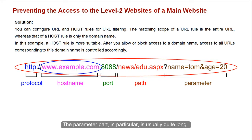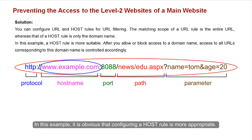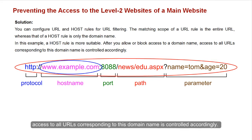The parameter part, in particular, is usually quite long. In this example, it is obvious that configuring a host rule is more appropriate. This is because after you allow or block access to a domain name, access to all URLs corresponding to that domain name is controlled accordingly.